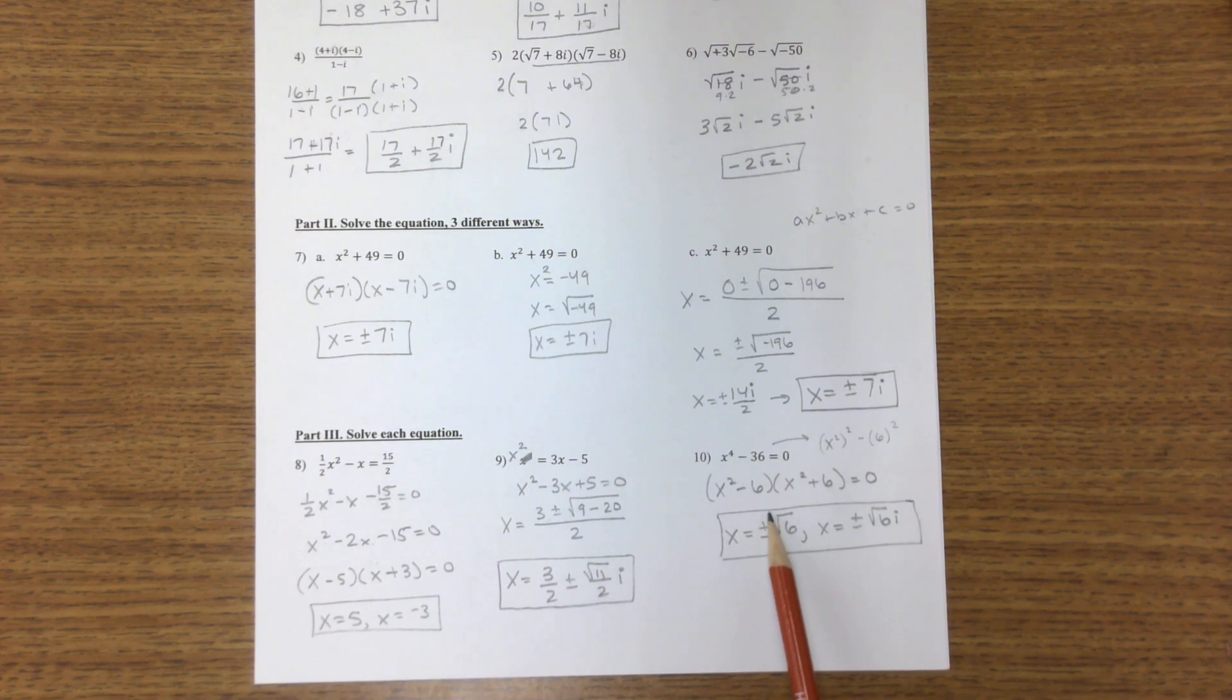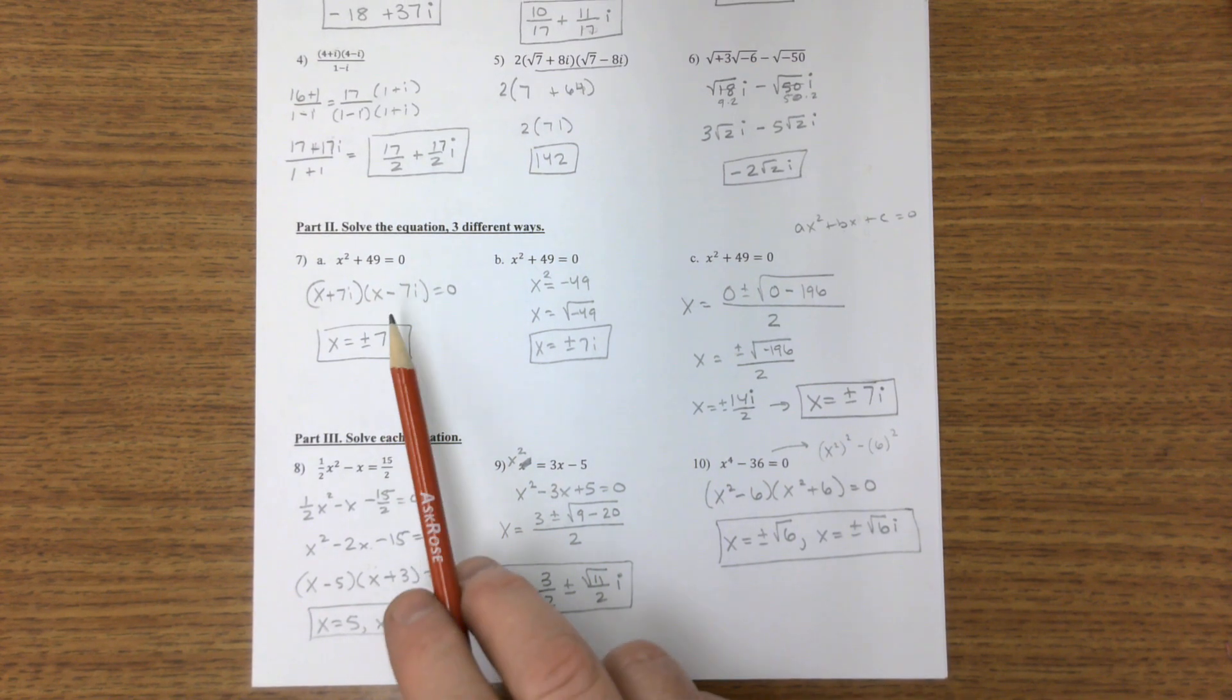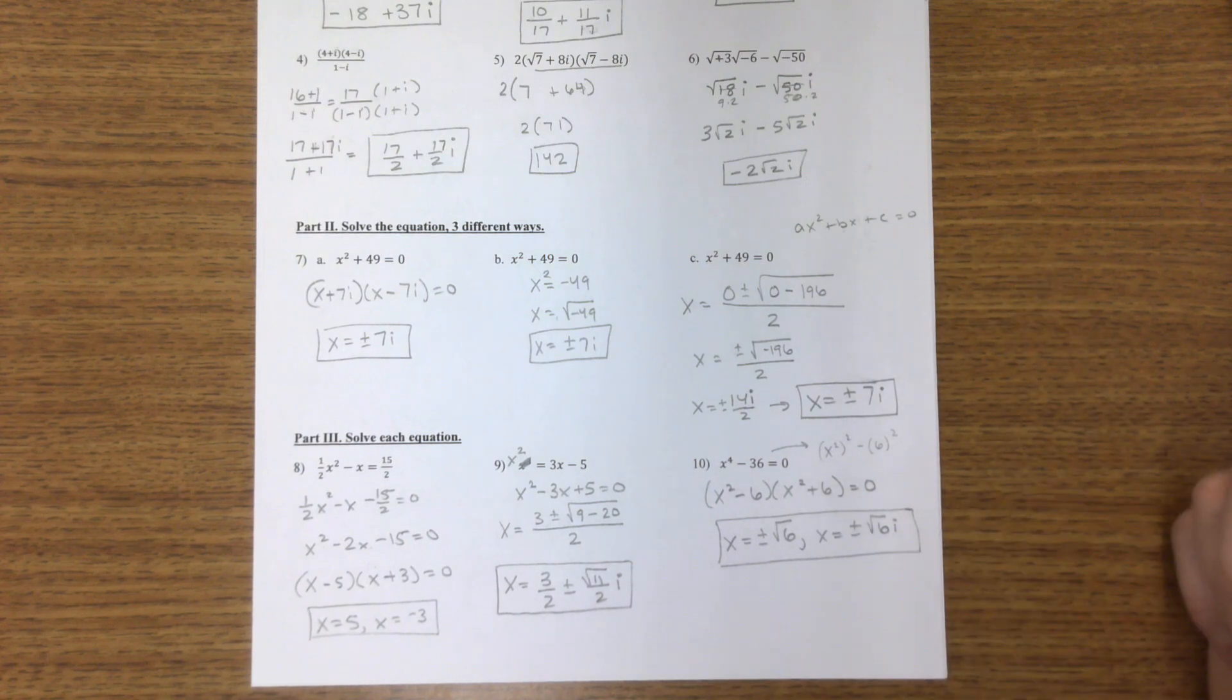This leads us to plus or minus root 6. This leads us to the same thing but with an i. Once you get to this point, you can factor it, solve it this way, or quadratic formula. Factoring is usually the easiest.